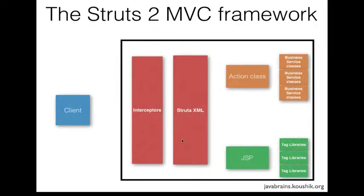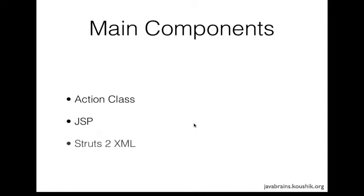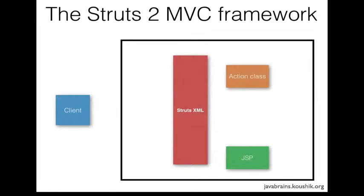So having eliminated those components, we are left with three main components: the action class, the JSP, and the struts.xml. These are the three components that we're going to write in our simple STRUTS2 application, and we're going to see how they interact with each other. The interaction between these three components is primarily carried out by the controller, and we can configure how the interactions happen by using the struts.xml. So we're going to look at that first.